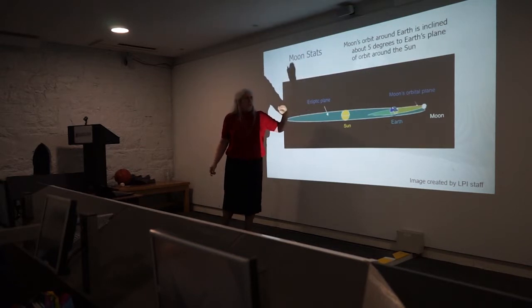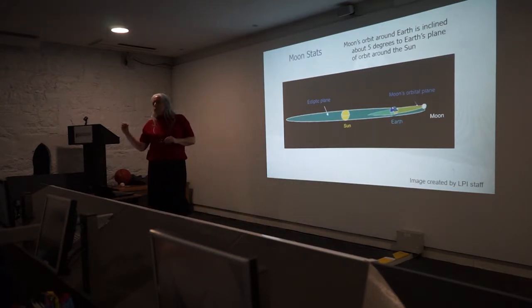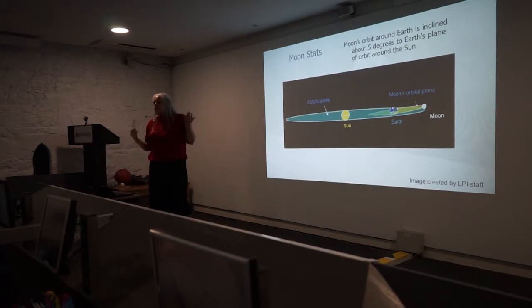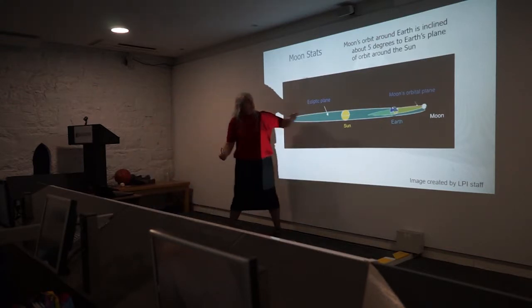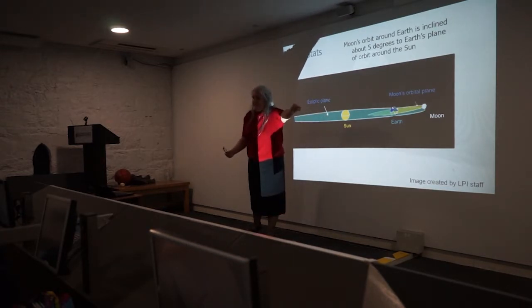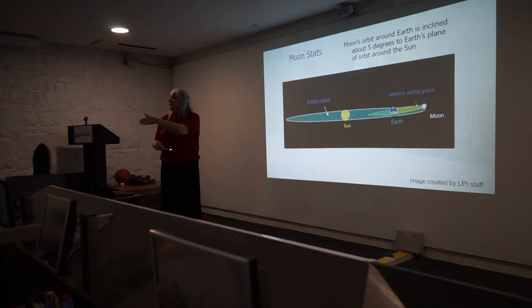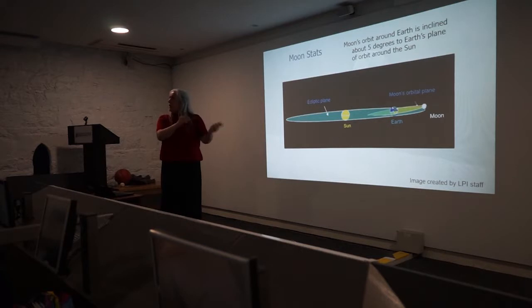Why you don't get an eclipse every month is due to the tilt of the moon's orbit. To get an eclipse, the moon at full moon for a lunar eclipse — or new moon for a solar eclipse — has to be in the plane of Earth and sunlight, which typically happens twice a year. If the moon lines up on one side, two weeks later on the far side it's likely to line up again.